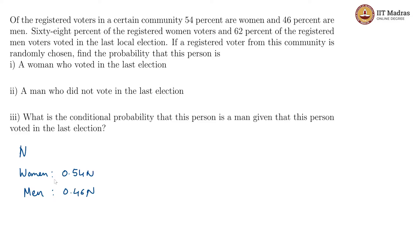These are the total number of women and men voters in this n. Now, among them, 68 percent of registered women voters — so of the 0.54n, 68 percent — and 62 percent of the registered men voters, which is 62 percent of the 0.46n. So we have a situation like this.